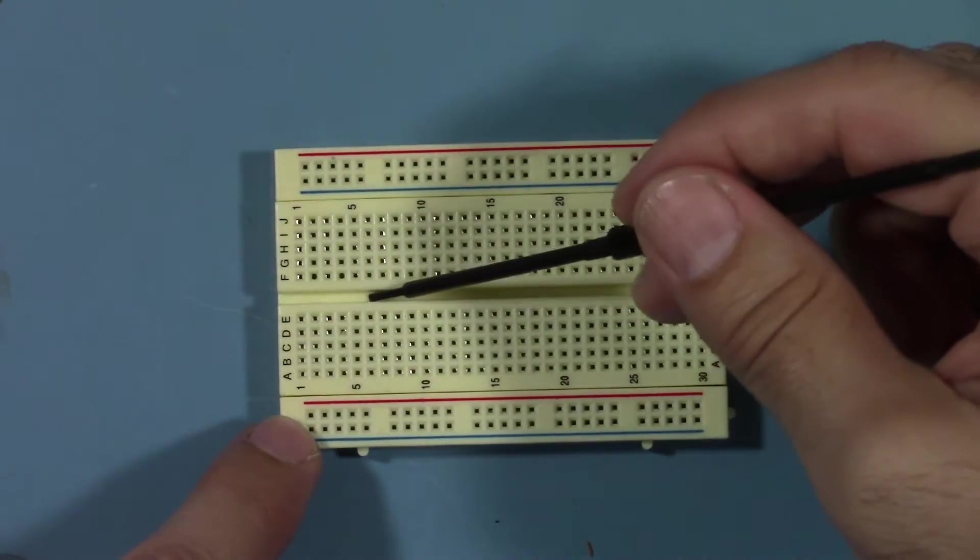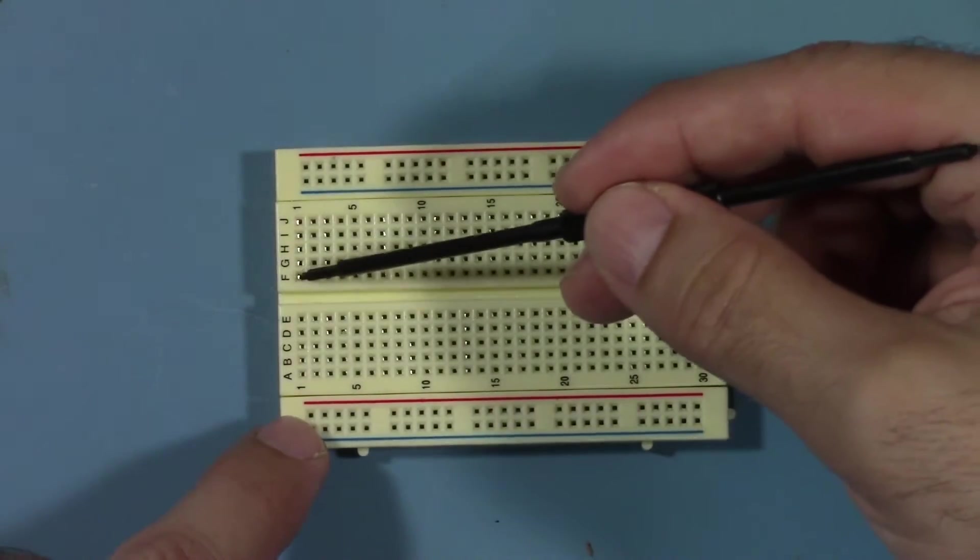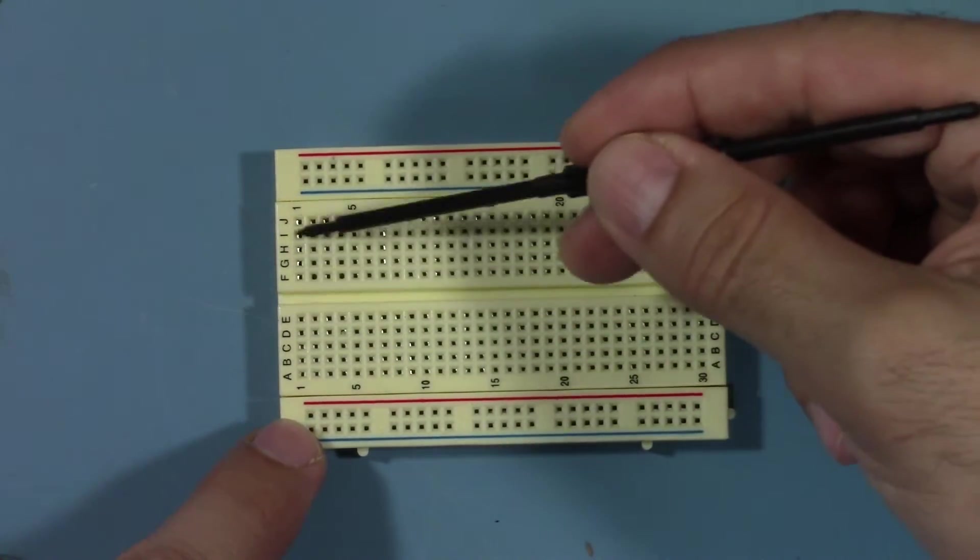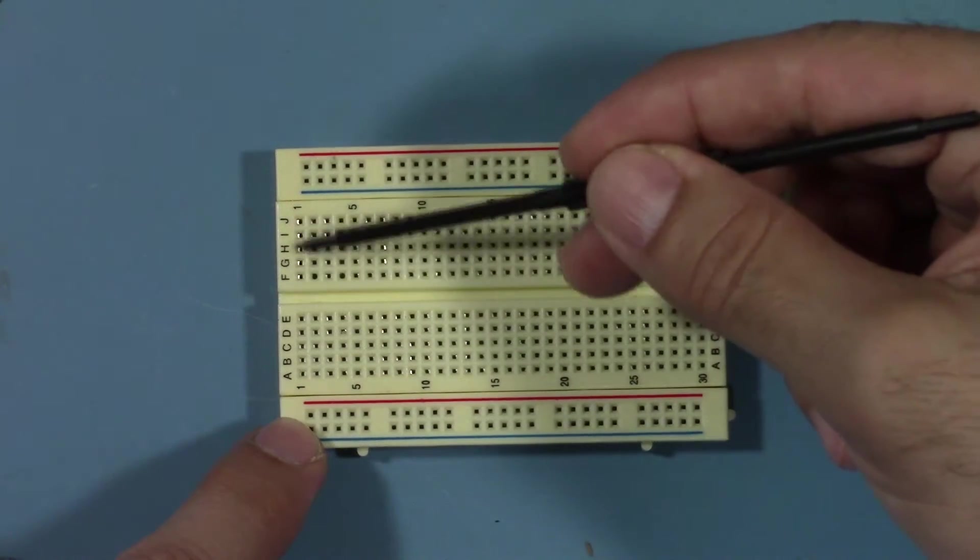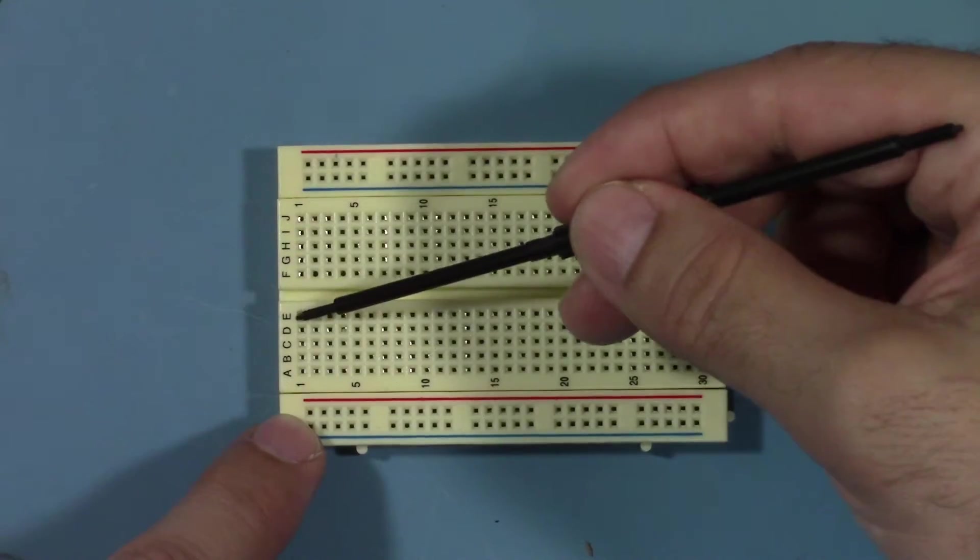However, you see there's a break along here. It's usually a notch or a trough is what it's referred to or a trench. So this row one here is not connected to this row one here. So F through J are not connected to A through E.